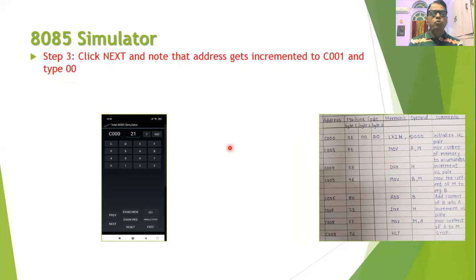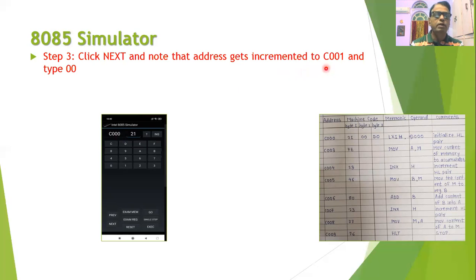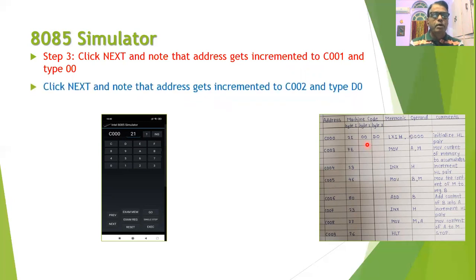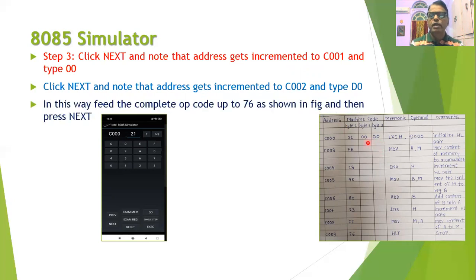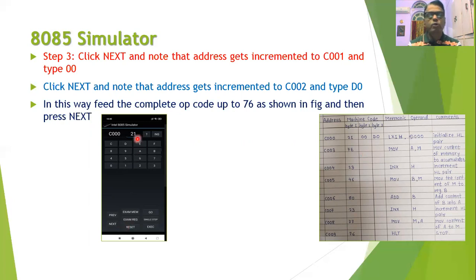Next, click the Next button again. You will find that the address of the memory location will automatically increment to C001. Then type the next code, which is 00, from the sheet. Once you enter 00, click Next again so the memory location address increments to C002, and then enter the code D0. In this way, by sequentially pressing the Next button, the address is automatically updated and each time you enter the corresponding opcode.